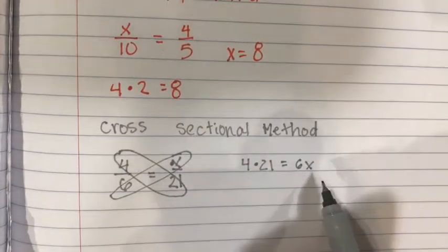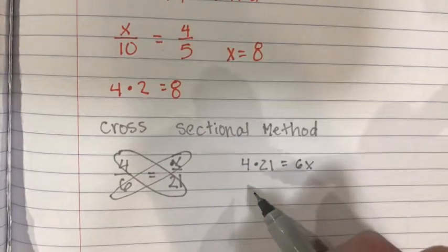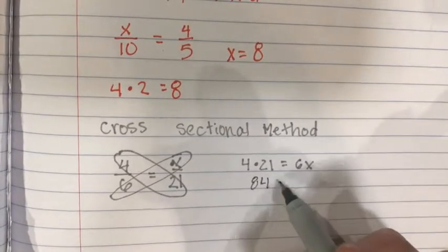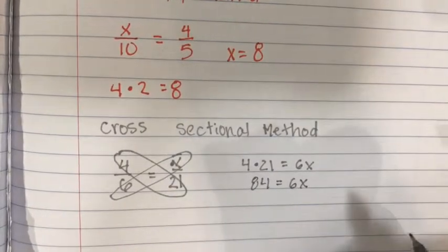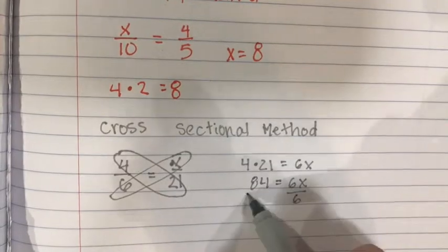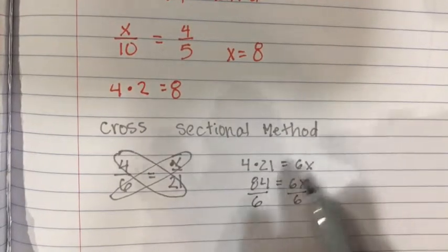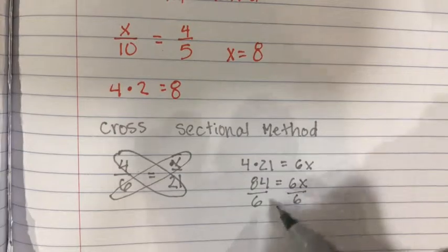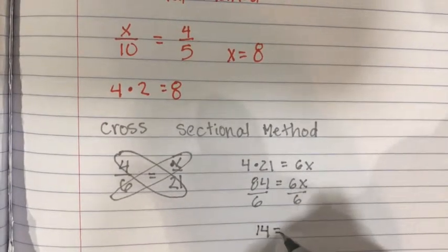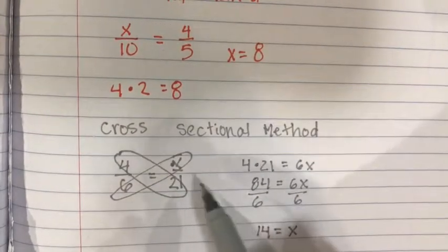And then we solve for x. So 4 times 21 is 84 and equals 6x. We divide by 6 on each side to isolate x. And 84 divided by 6 is 14, so x equals 14.